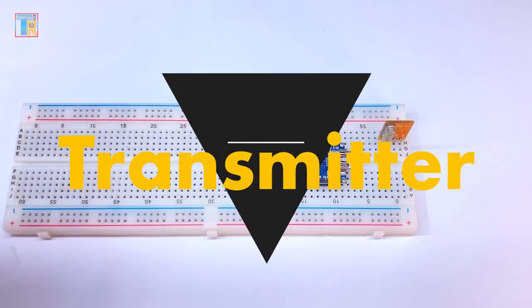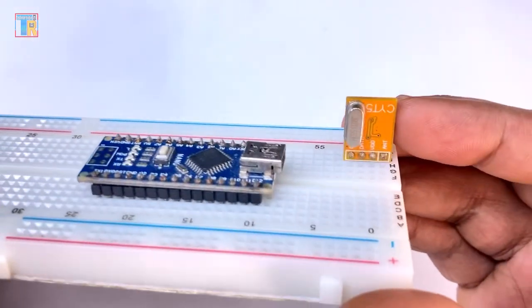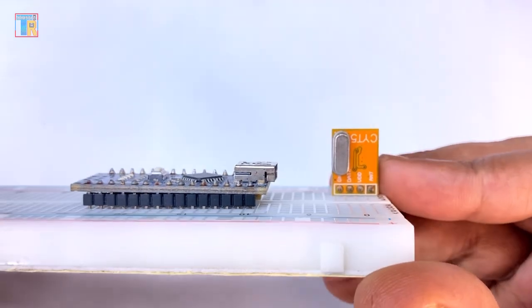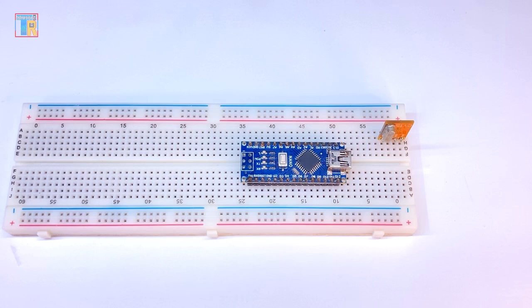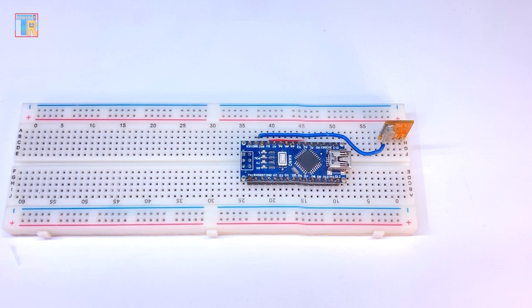First I will build the transmitter part. This Arduino is programmed with the transmitter code and here is the RF transmitter module. Connect GND to GND of RF module, 5 volt to VDD, D12 to data.